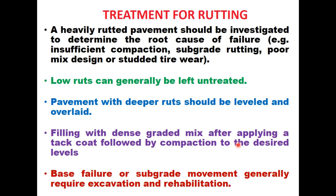For treatment of rutting, a heavily rutted pavement should be investigated to determine the root cause of failure — whether it is insufficient compaction, subgrade rutting, poor mix design, or steady tire wear — and once the reason is known, it can be rectified. Low ruts can generally be left untreated, but pavements with deeper ruts should be leveled and overlaid. Ruts can also be filled with dense-graded mix after applying a tack coat, followed by compaction. In case of base failure or subgrade movement, excavation and rehabilitation of the pavement is required.